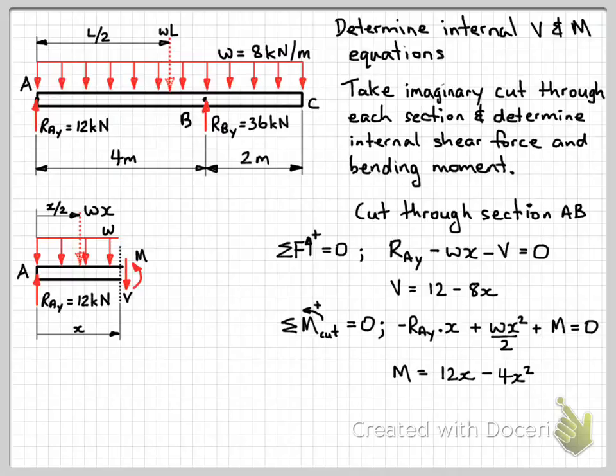When we go to draw our shear and bending moment diagrams, we'll want to know the values at important points. So at the start of the beam, at point A, so X equals zero, we can substitute that into our equation here. And of course that will be equal to 12. And our moment equation, substitute X equal to zero in here, and the moment is zero. And we should know that just from the fact that we've got a pin connection here, and no moment applied.